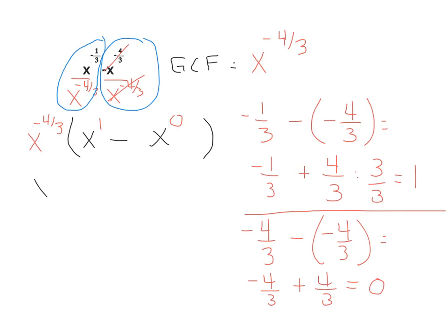So when we clean this up, we have x to the negative four-thirds in front. x to the first power is just x, and x to the zero power is one. So x minus one. Or like I said, if you notice they were the same terms, you divide them as long as they're not zero, and you get one. So there's our result, x to the negative four-thirds times x minus one.